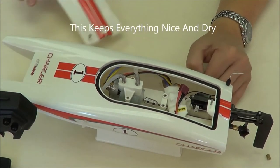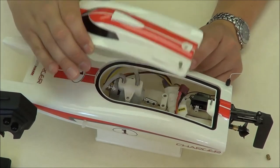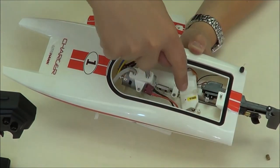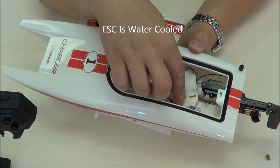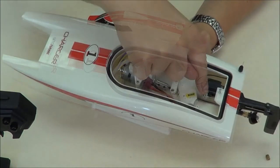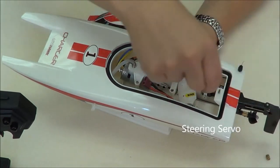When you open this up, there are tubes. This center piece here is a speed controller and the receiver. This here is for the rudder, this is your steering servo.